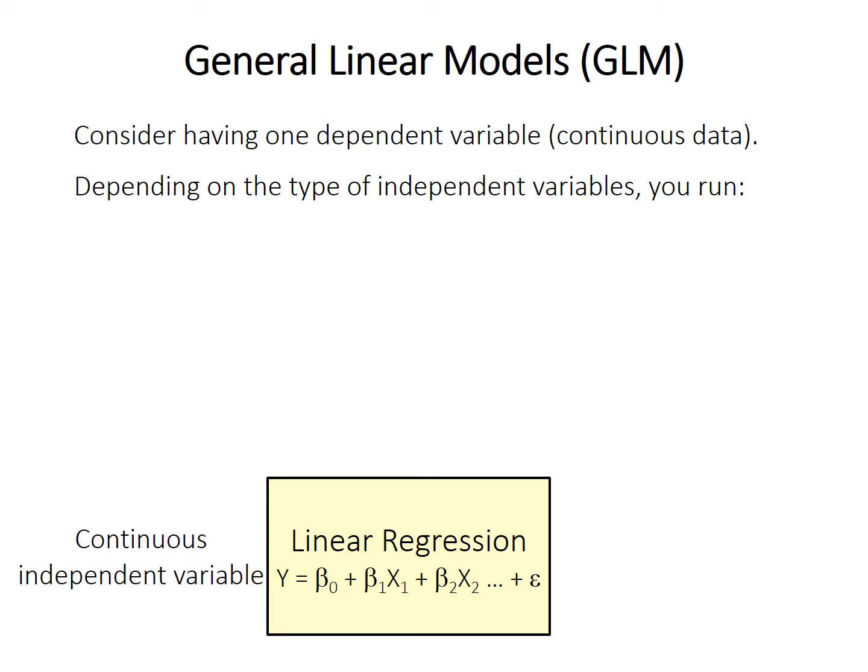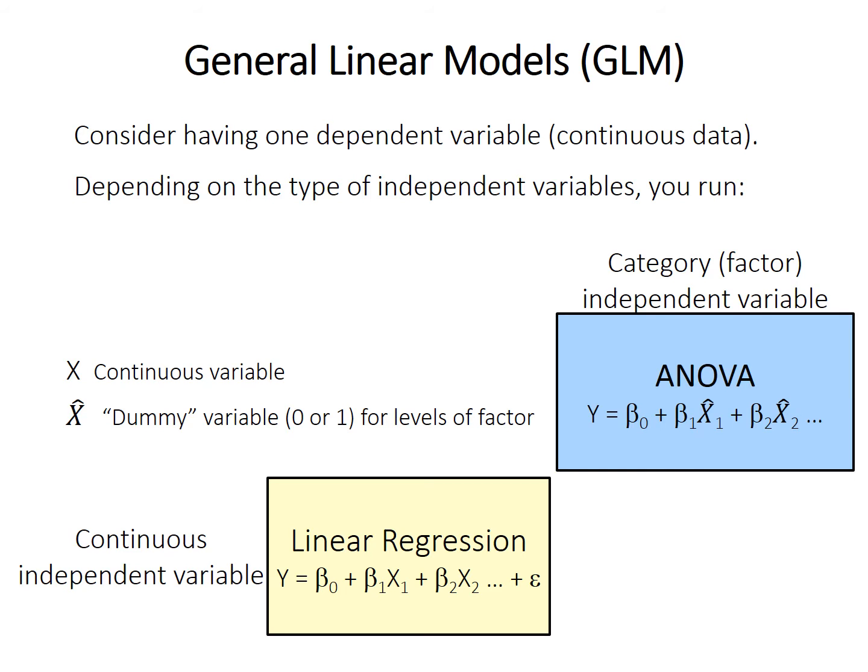But if the independent variables are instead categorical factors, we actually have ANOVA. ANOVA is an example of a general linear model related to linear regression, except the factors — denoted x̂1 and x̂2 here — are treated as dummy variables, coded as 0 or 1 for the different levels of the factor, for the different categories they belong to.